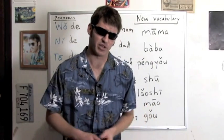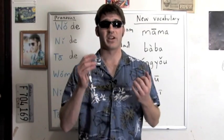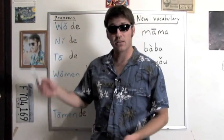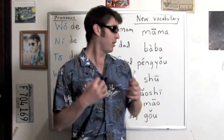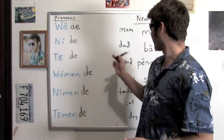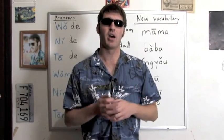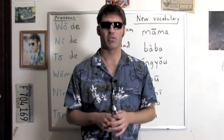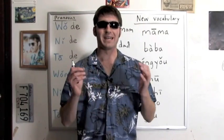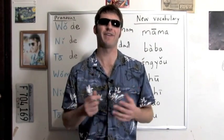Last time we talked about adjectives — always put 'hěn' (very) before an adjective. Let's use one we know: hǎo — good. If I want to say 'my book is good': wǒ de shū shì hěn hǎo — my book is very good. My friend is very tall: wǒ de péngyou hěn gāo. Our dog is fat: wǒmen de gǒu hěn pàng.